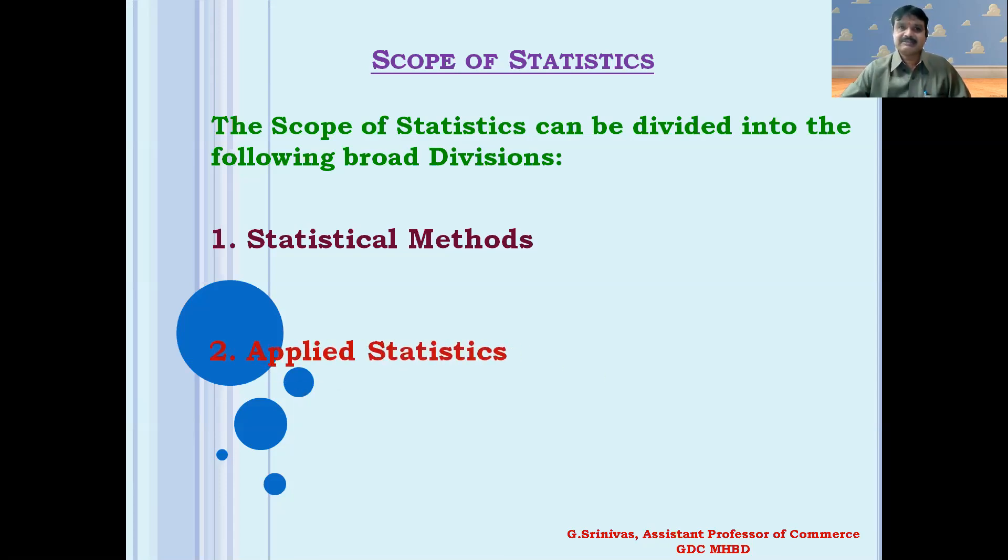The second one is applied statistics. Applied statistics consists of applications of statistical methods and techniques to problems and facts as they exist. Quality control, sample surveys, and quantitative analysis for business decisions are included in applied statistics.